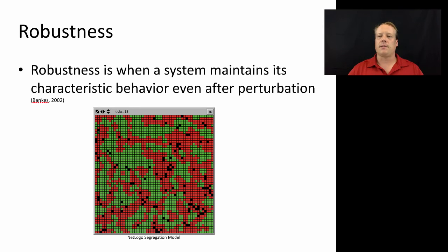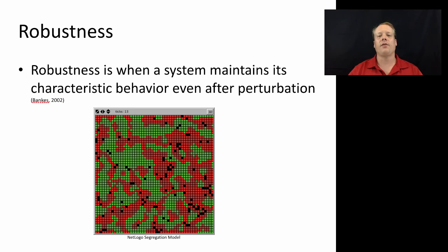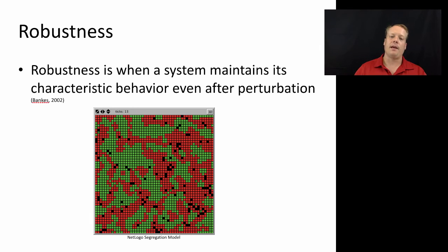A somewhat opposite notion that sometimes appears in agent-based modeling is robustness. Robustness is when a system maintains its characteristic behavior even after you've perturbed an input to the model. The Tom Schelling segregation model implemented in NetLogo is a great example: even if you change the percentage of neighbors like yourself you need in order to be happy, the model still winds up in a segregated state. It is robust to changes in that parameter.